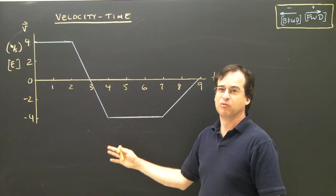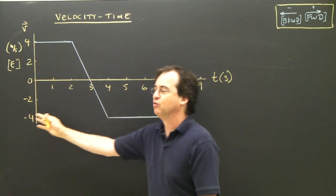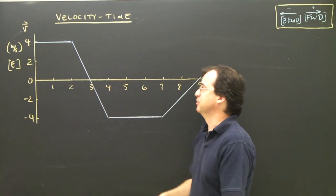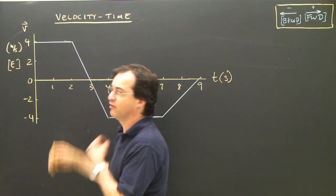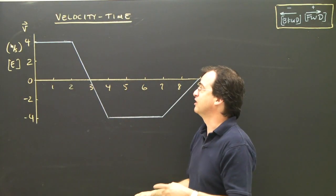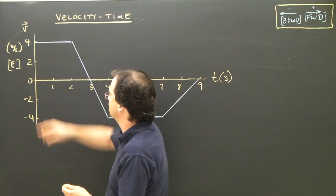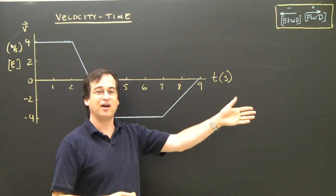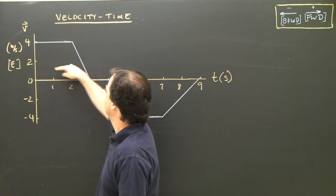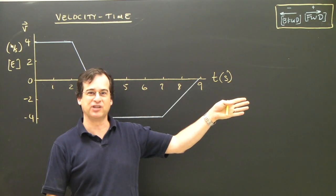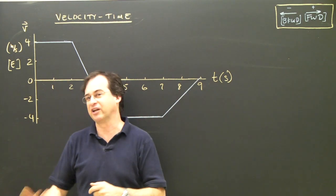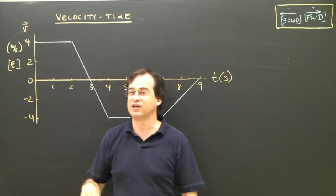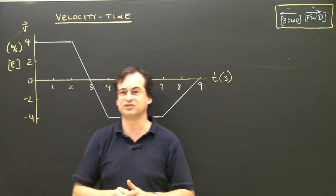Let's take a look at this VT graph. We're going to first describe what the object is doing, and then find the areas and look at distance and displacement. It's a VT graph which tells us the velocity at any given time. At zero seconds, I'm already moving at four meters per second — positive, so I'm running forward. At one second, I'm still running forward at four meters per second — not getting faster or slower. That's uniform motion. At two seconds, I'm still running forward at four meters per second, so this whole section is constant speed forward.